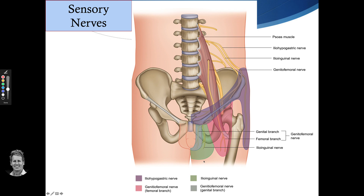If you stroke this area on the male, the testicle will lift — it's innervated by the inguinal nerve going in around L1, then coming out by the genital branch for the L2 area, causing what is called the cremasteric reflex. It's only present in the male because of the testicle.